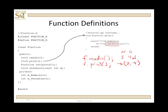One more thing I want to point out: notice the difference here — I have to scope the functions. I have to tell the compiler this is for the fraction class. This operator here is called the scope resolution operator. Without that, it won't compile.